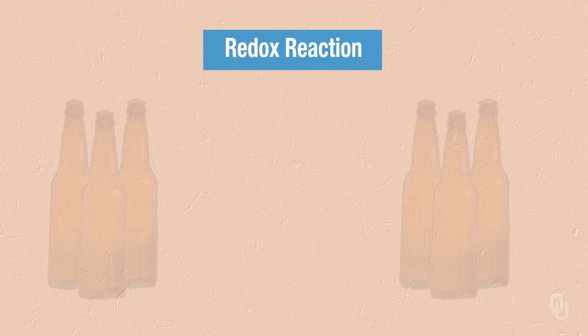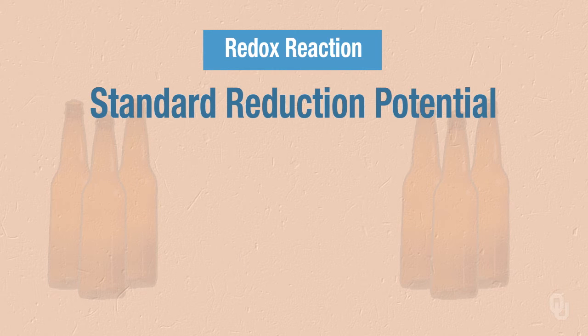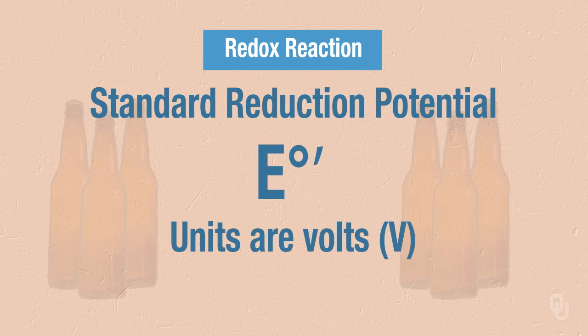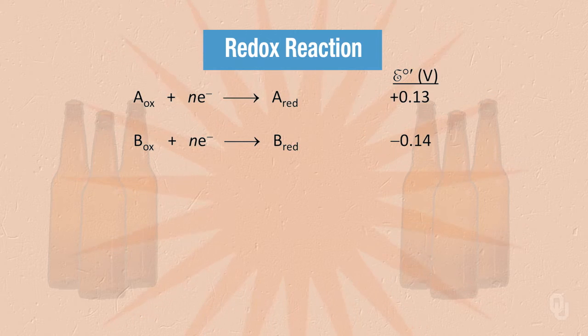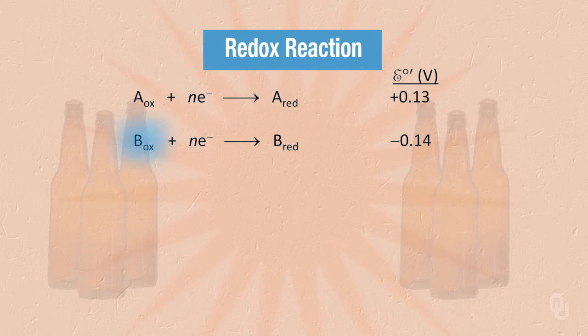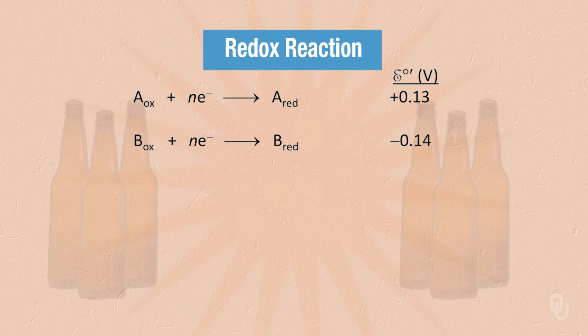Continuing our review of redox reactions, we want to think about the energetics of this process. We consider standard reduction potentials, abbreviated as E naught prime, with units of volts. In our example, A in its oxidized state gains electrons to become reduced, with a standard reduction potential of plus 0.13 volts. The analogous process for B has a standard reduction potential of minus 0.14 volts.